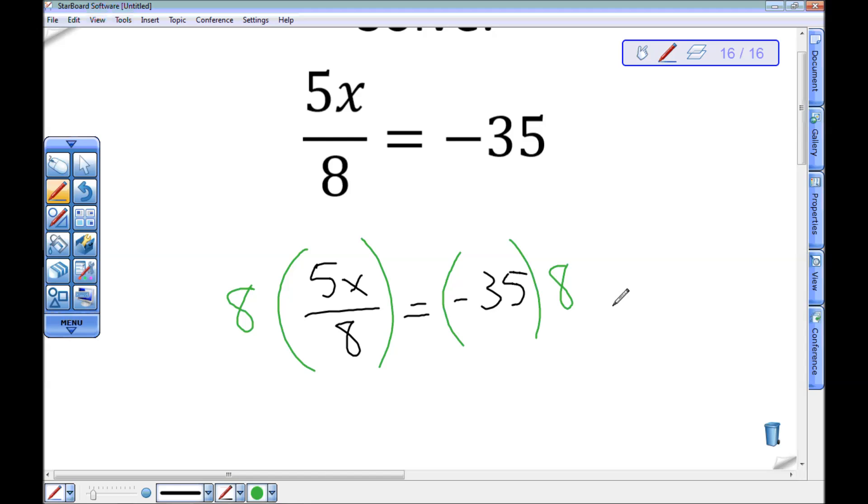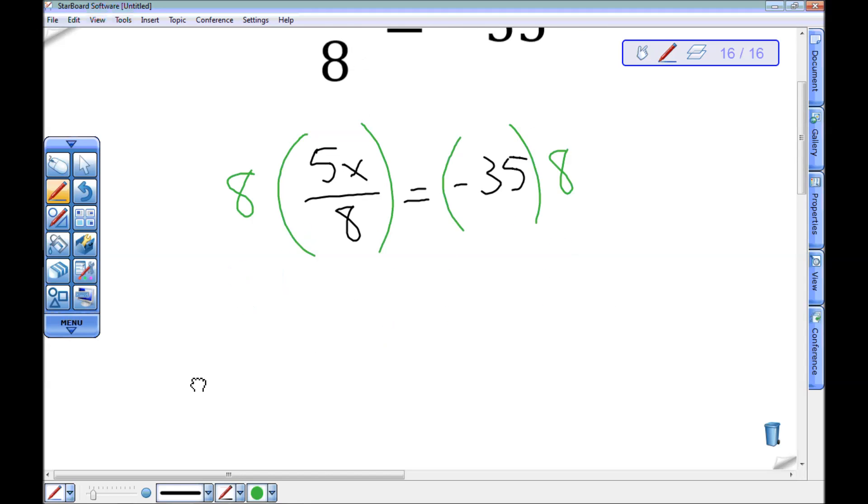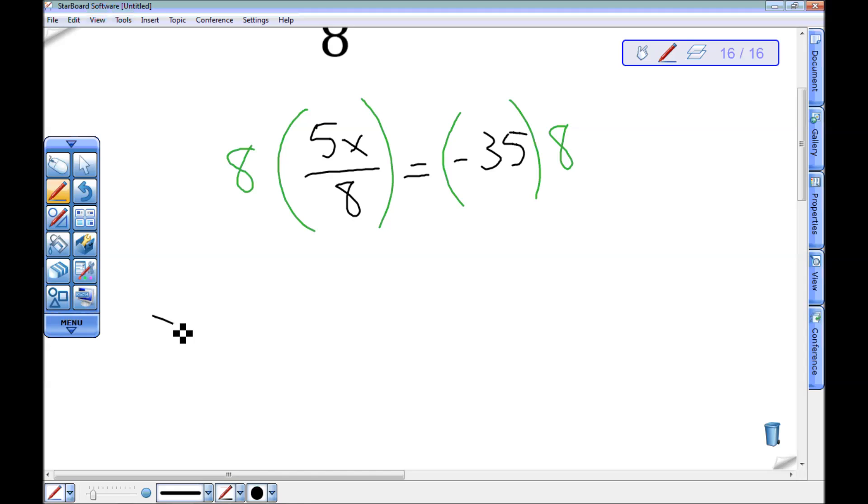So 5x divided by 8, and then that times 8 will give me back just this 5x. Over here, negative 35 times 8 is negative something. 35 times 2 is 70, 2 times 4 is 8, so 70 times 4 is 280. So this is negative 280.